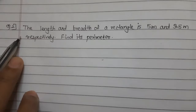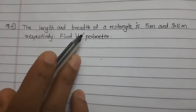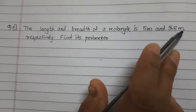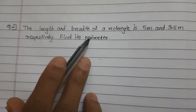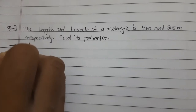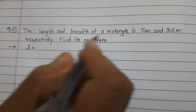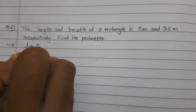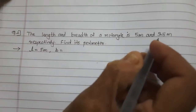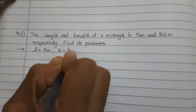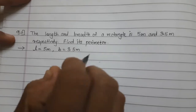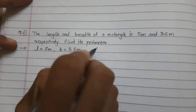Let's solve question number 2. The length and breadth of a rectangle are 5 meter and 3.5 meter respectively. Find its perimeter. What is given: length is 5 meter and breadth is 3.5 meter. What is asked: find its perimeter.